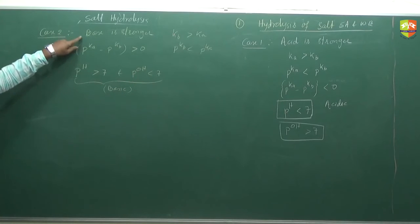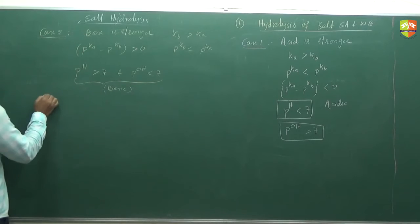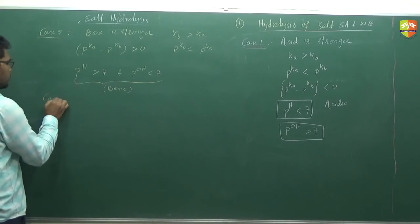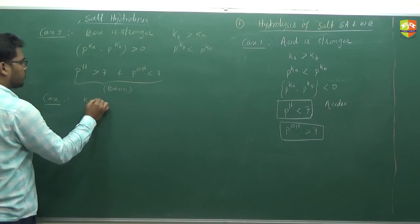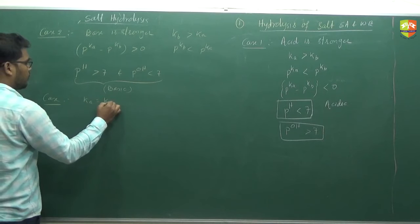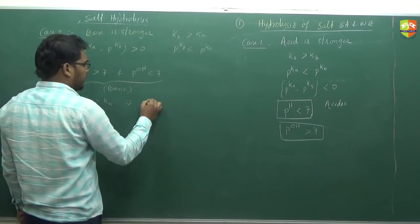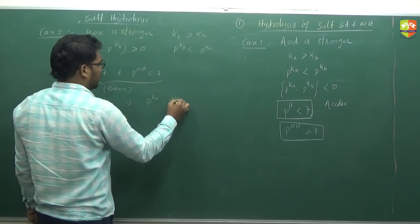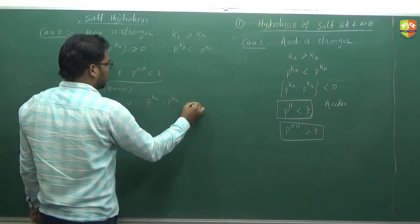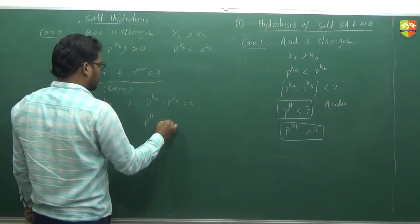Whatever is the stronger — acid or base — that will determine the nature of the solution. Case 3: when Ka equals Kb, equal strength. In this case pKa minus pKb is zero, and pH equals 7. The solution is neutral.